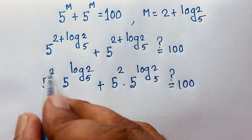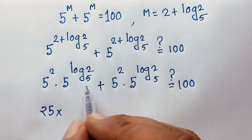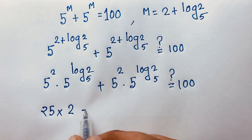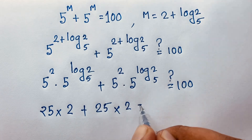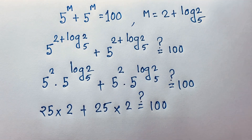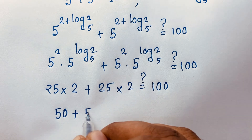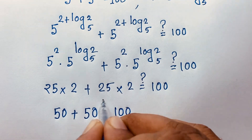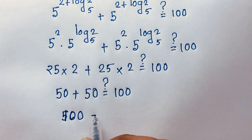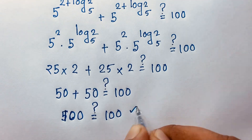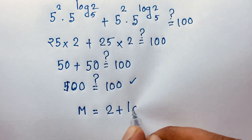Now you can see: 5 to the power 2 is 25, and 5 to the power of log₅2 equals 2 according to logarithm rules. So we have 25 times 2 which is 50, plus 25 times 2 which is also 50, equals 100. So 50 plus 50 equals 100. Left-hand side equals right-hand side, confirming m is equal to 2 plus log₅2 is the value of m in this exponential math problem.